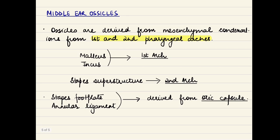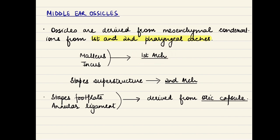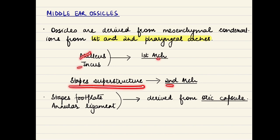The middle ear ossicles — the malleus, incus, and stapes — are derived from mesenchymal condensations of the first and second pharyngeal arches. The malleus and incus are derivatives of the first pharyngeal arch. The stapes consists of a head, two crura (anterior and posterior), and a footplate. The stapes superstructure — excluding the footplate — is derived from the second pharyngeal arch. The footplate and the annular ligament are derived from the otic capsule. This completes the development of the external and middle ears.